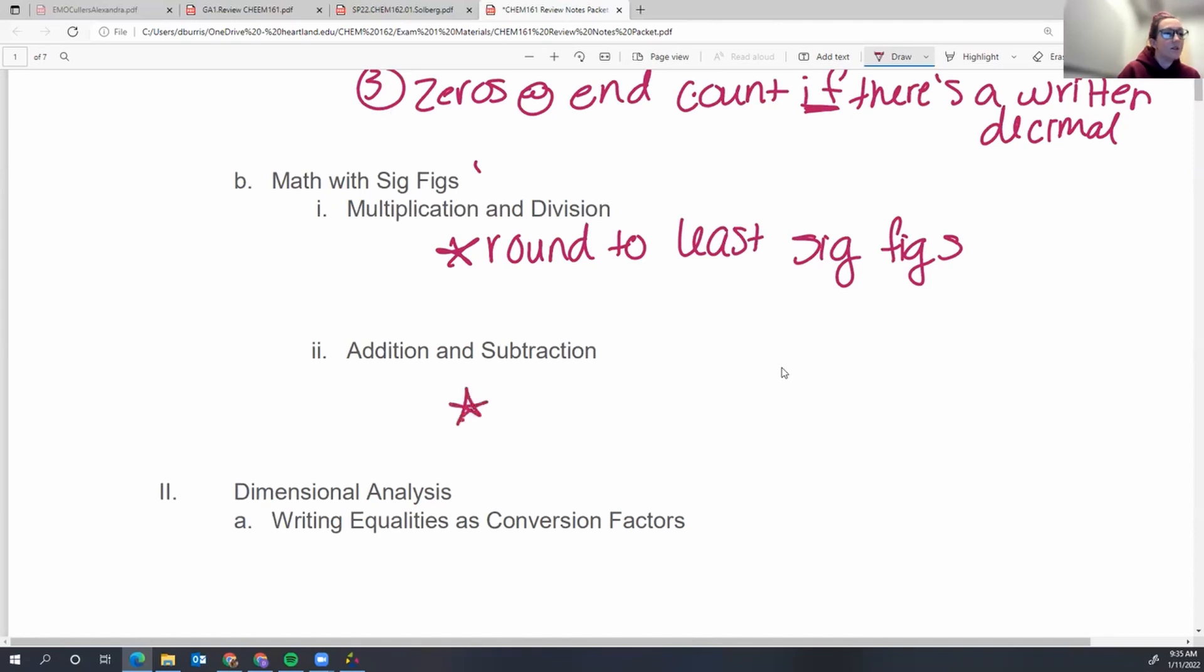Okay. Addition and subtraction, however, round to least decimal places. Okay. So it's only got two decimal places versus one, one decimal place for your final answer. Okay. And if you have mixed operations, make sure you follow those through.